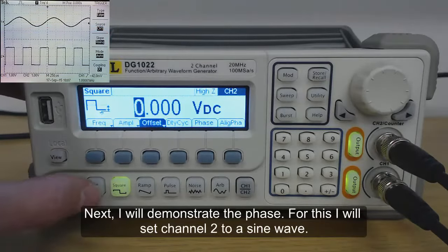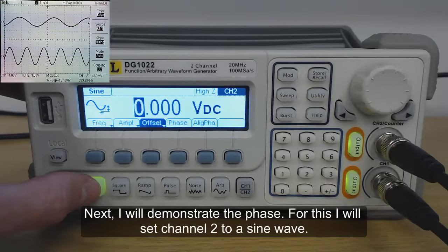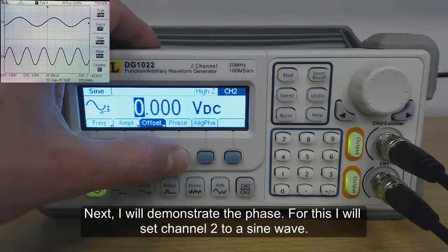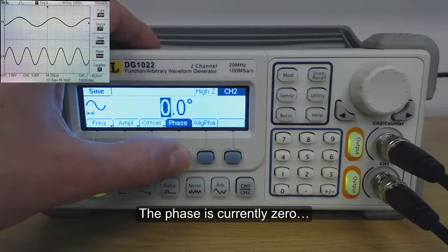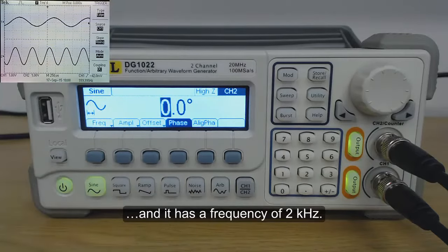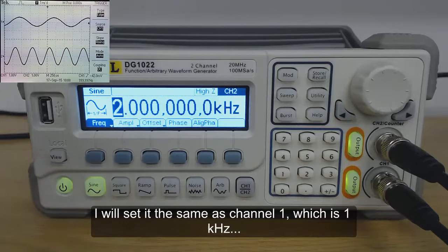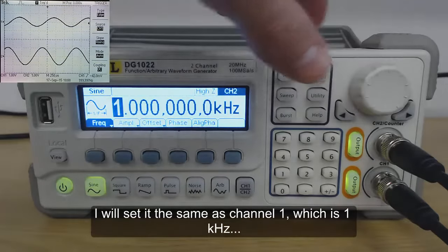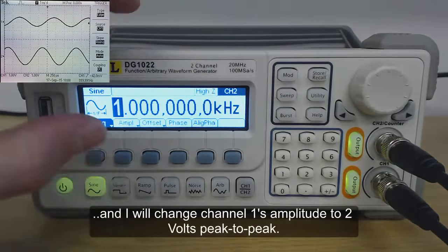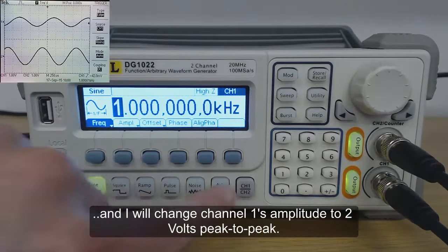Next, I will demonstrate the phase. For this, I will set channel 2 to a sine wave. The phase is currently 0 and it has a frequency of 2kHz. I will set the frequency the same as channel 1 which is 1kHz, and I will change channel 1's amplitude to 2V peak to peak.